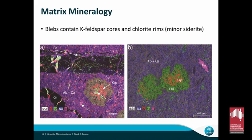Back to the matrix mineralogy: we have graphite-rich veins with disseminated sulfides and the blebs seen in the micro-XRF imaging. Element associations show K-feldspar centers with chlorite around the outside in a matrix of albite, quartz, and minor biotite, with graphite distributed ubiquitously throughout. There's also titanite present — I've been discussing with the Geological Survey of Sweden, who are currently remapping the area and are interested in dating these minerals; titanite is one of their particular targets.